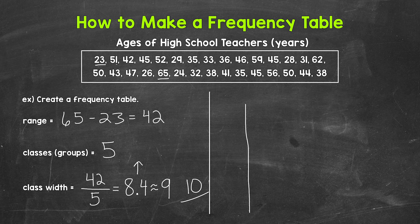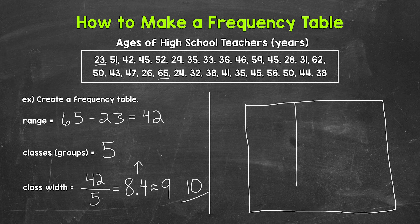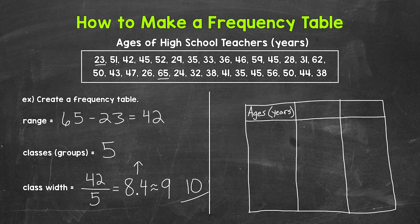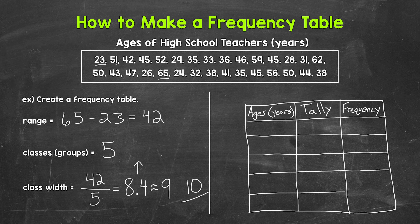Now we can start our table. We will make three columns and then a row up top for our column headers, the labels. The column on the left will be the ages column. The middle column will be the tally column. And then the column on the right will be the frequency column. Now we need five more rows for our classes. So one, two, three, four, and five.